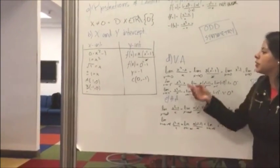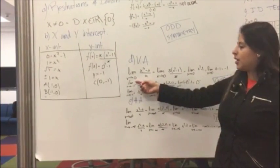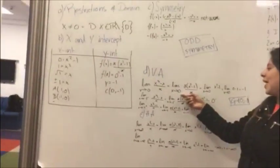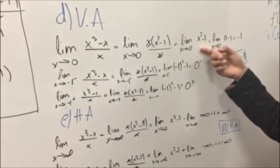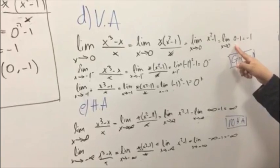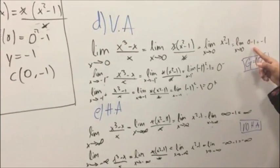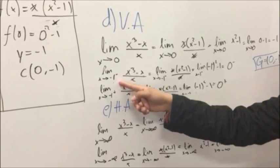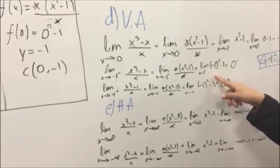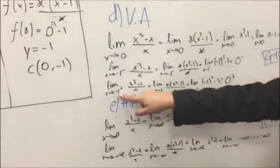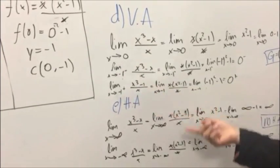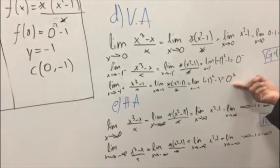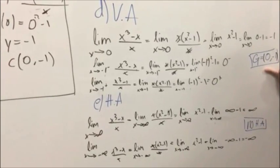Now we find the vertical asymptote by evaluating x equals zero. Taking the limit as x approaches zero, we simplify to x squared minus one and substitute zero, getting minus one. Evaluating the limit from the left gives negative zero, and from the right gives positive zero. We note there is a gap at the point (0, -1).